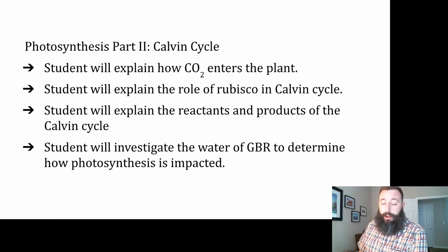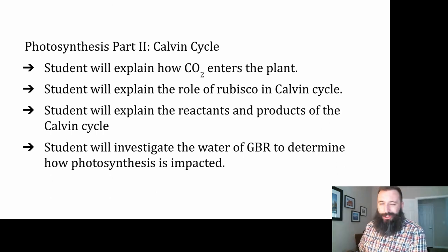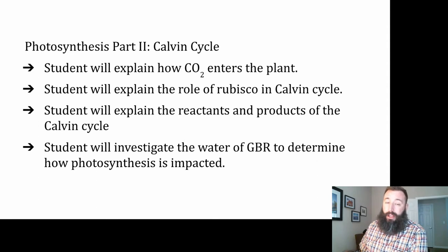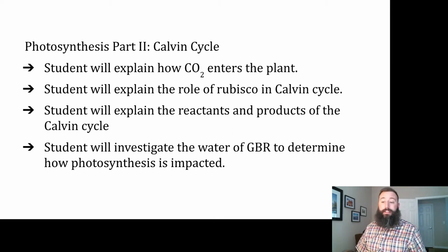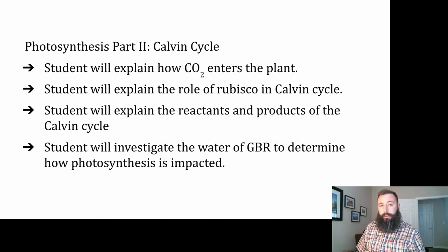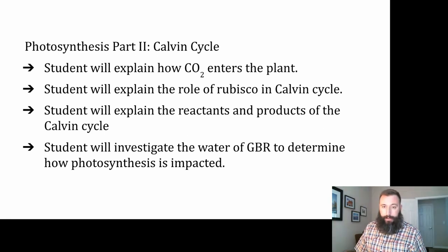Howdy, this is Mr. Justice. Today we're going to talk about the second part of photosynthesis, the Calvin Cycle. We'll also get into how carbon dioxide enters into the plant tissue of leaves. We'll talk about one of the most important enzymes on earth, Rubisco, the reactants and products of the Calvin Cycle. During your independent practice, I'm going to ask you to investigate water of the Great Barrier Reef to see how pollutants and/or sea temperatures are impacting photosynthesis in the area. The instructions will be on Canvas.